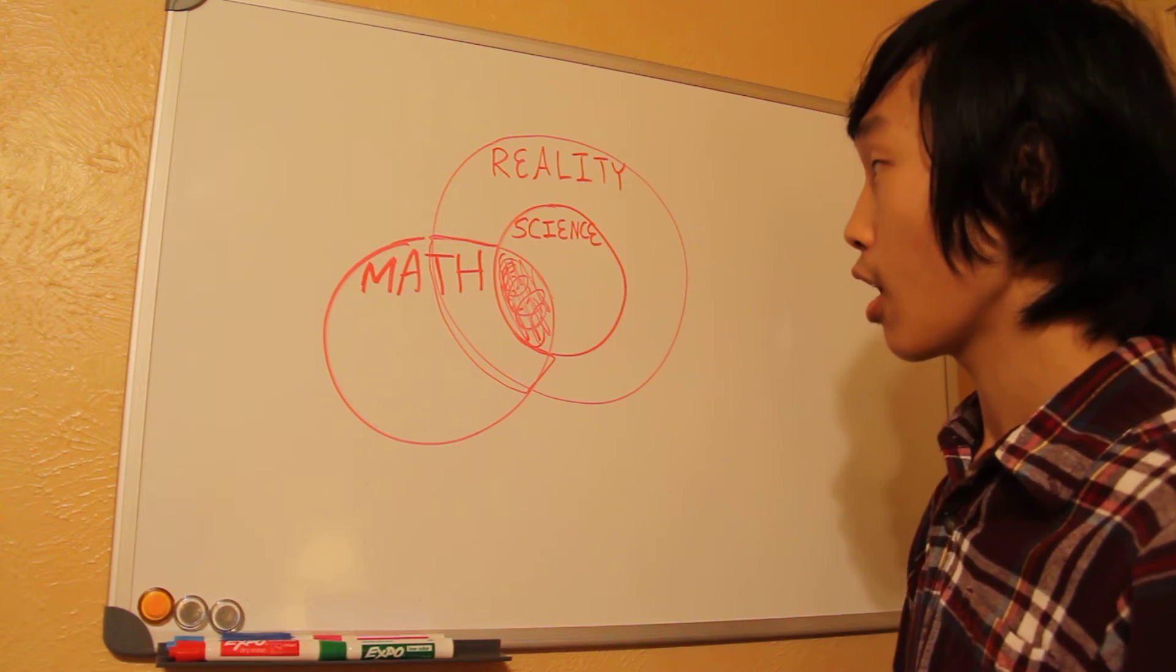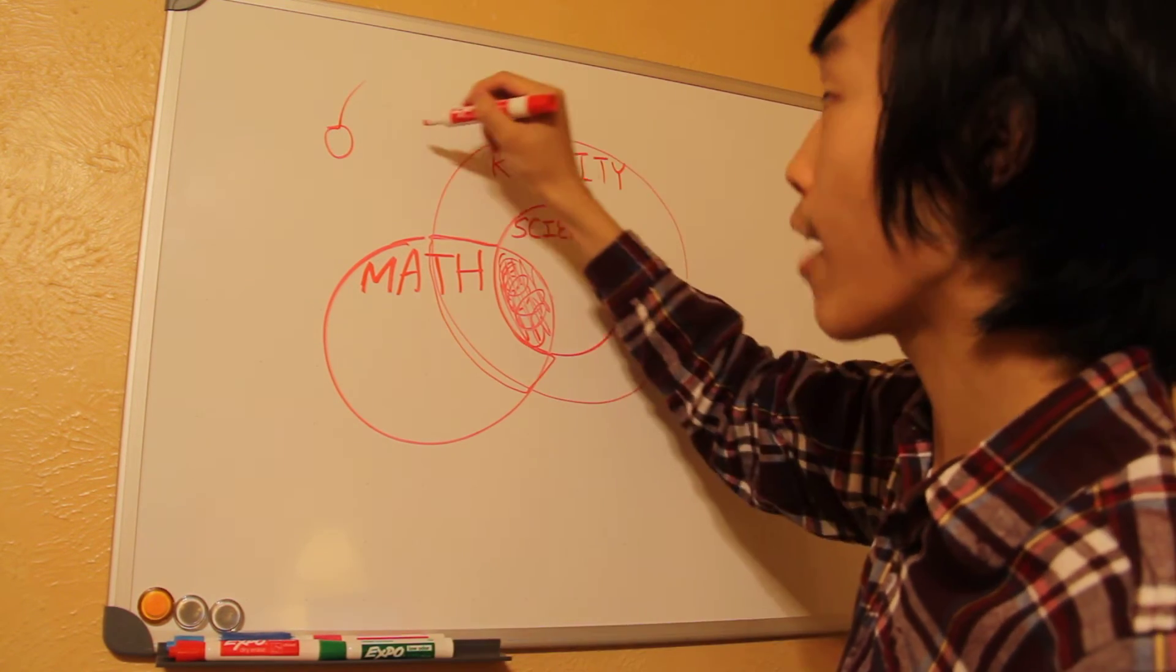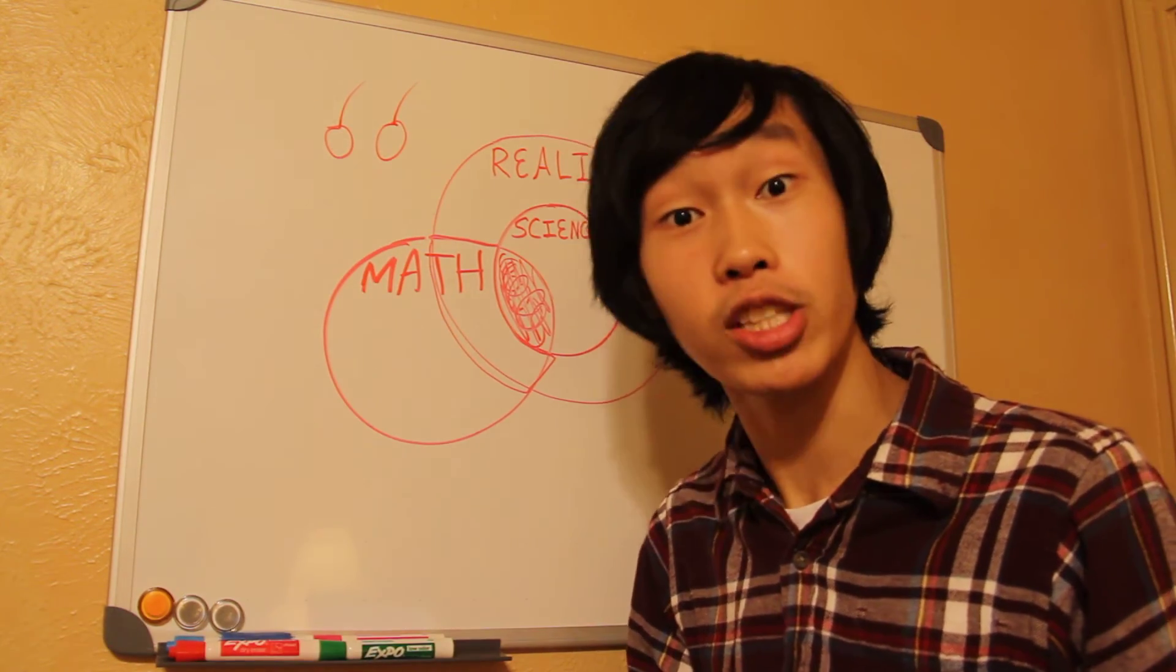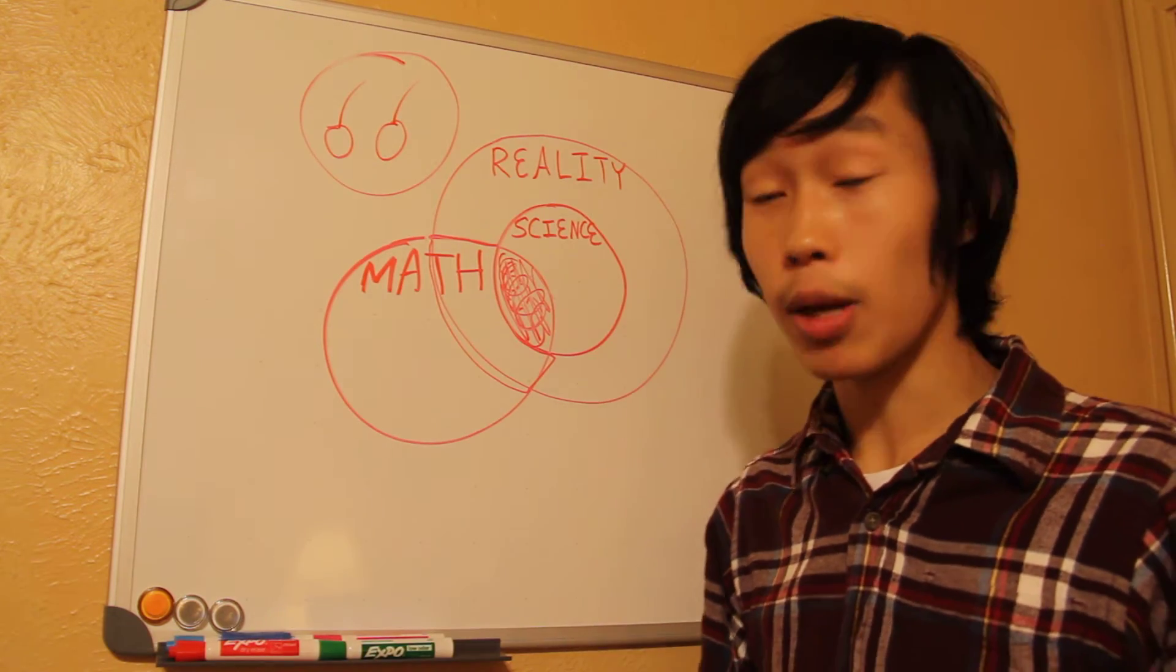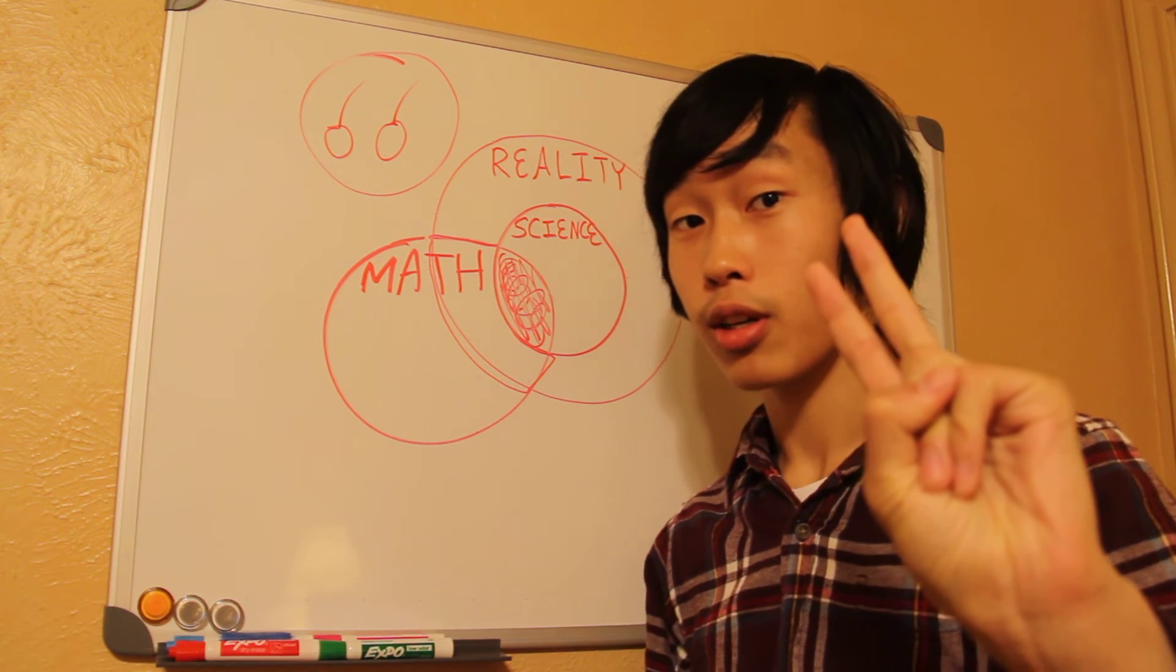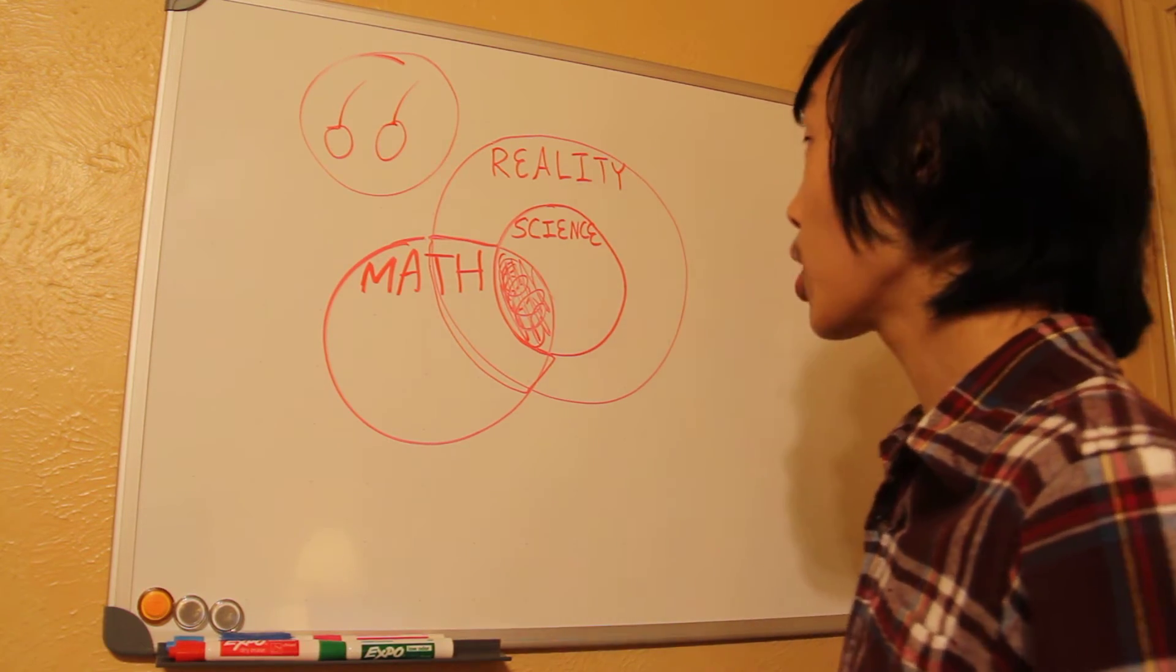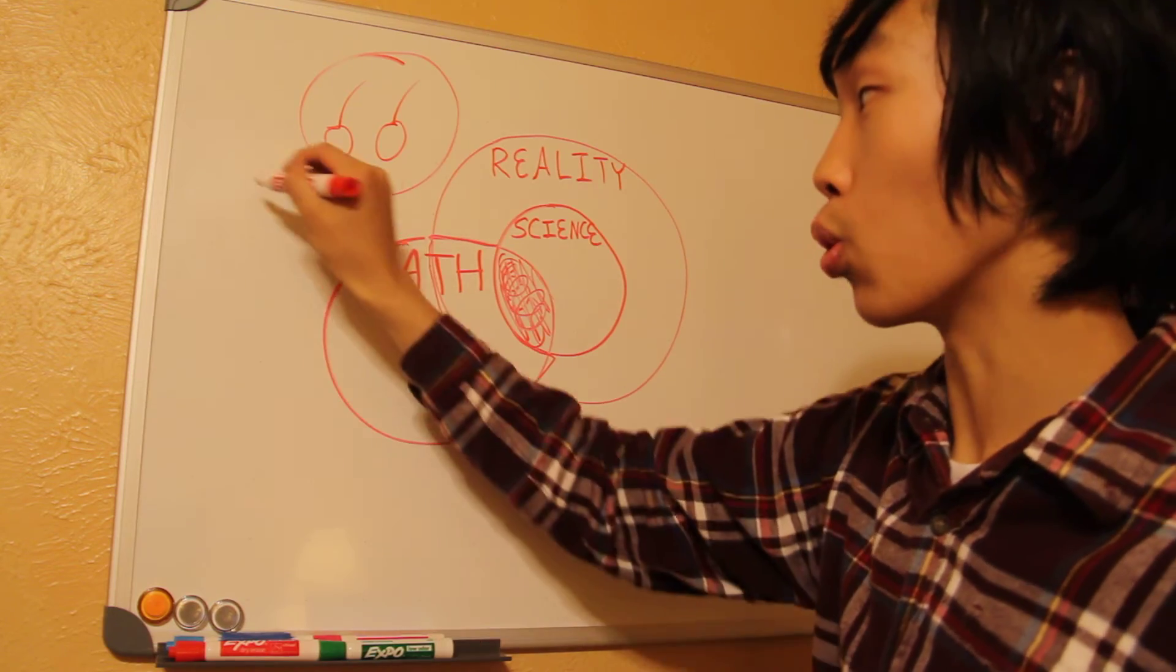So, for example, if I have a cherry, and then I have another cherry, I have two cherries. Amazing, right? This isn't science. Some people might say that the fact that if I have one cherry and then I have another, then I have two cherries, is scientific. But I say it's not, because it's just a fact.